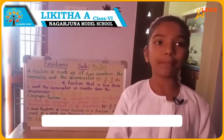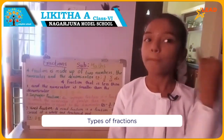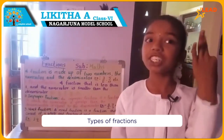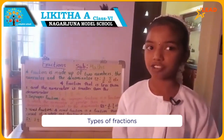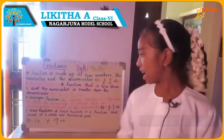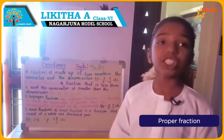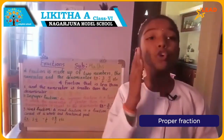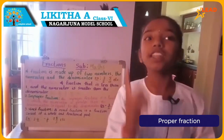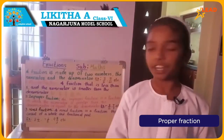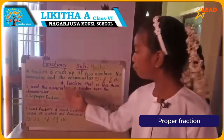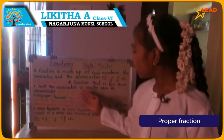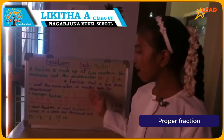There are three types of fractions: proper fraction, improper fraction, and mixed fraction. A proper fraction is a fraction that is less than 1 and the numerator is smaller than the denominator. For example, 4 by 5, 3 by 7, 10 by 25, etc.